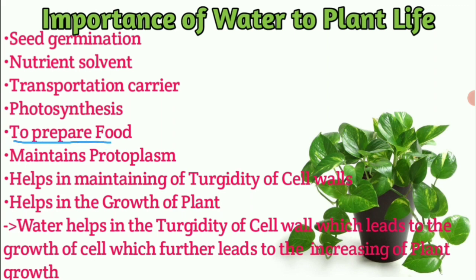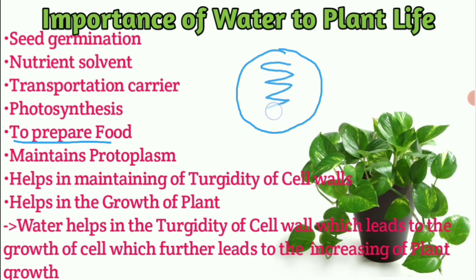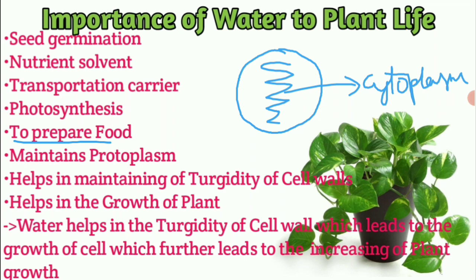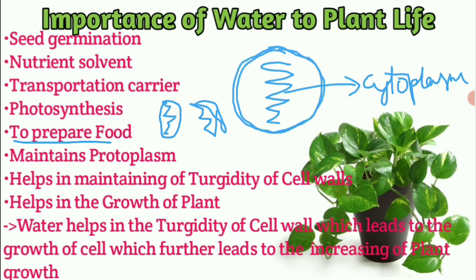Next, water maintains protoplasm. The cell contains cytoplasm, enzymes, and cell organelles such as mitochondria and endoplasmic reticulum. Overall, this entire content including the nucleus is called protoplasm. Water maintains the protoplasm. The cells remain fresh and active when water is present.